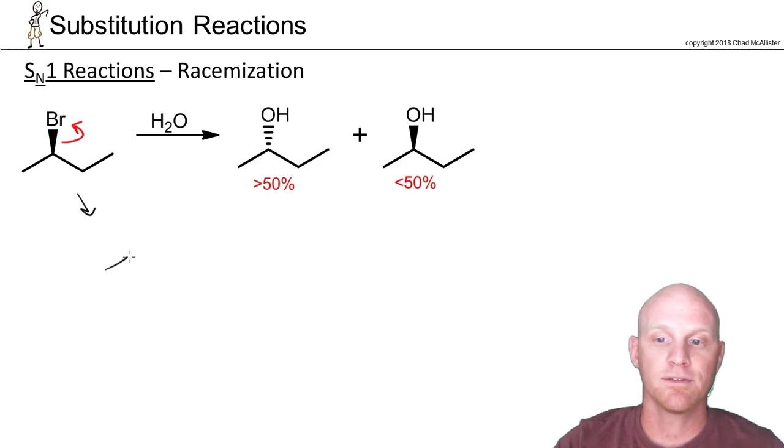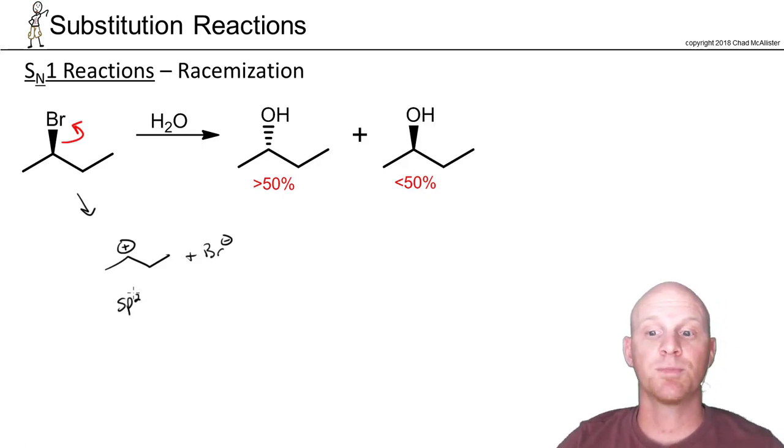So in this case first step leaving group leaves and that gets us our carbocation. And the key is that this carbocation is sp2 hybridized. It's not tetrahedral anymore. It's trigonal planar.